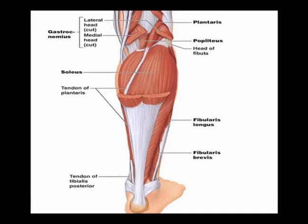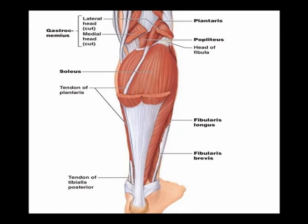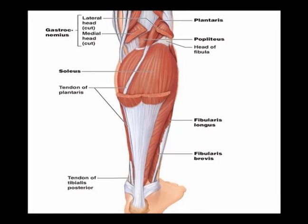Its origin is on the femur at the lateral condyle and also on the posterior horn of the lateral meniscus of the knee joint. Its insertion is on the posterior tibia, just superior to the origin of the soleus muscle.